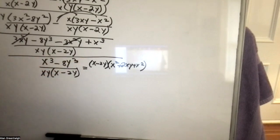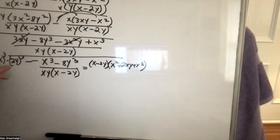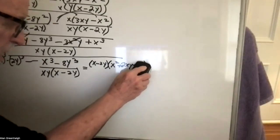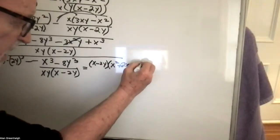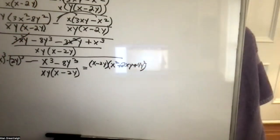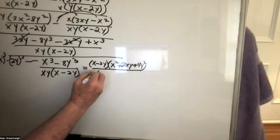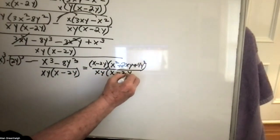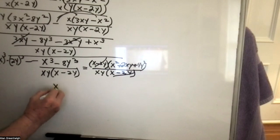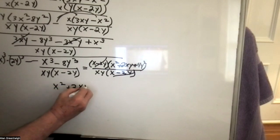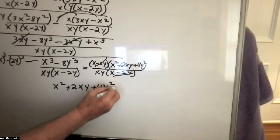It's really x to the third minus 2y to the third. So it's not just y squared — it's 4y squared because it's 2xy times 2xy. Then this is xy times x minus 2y. This cancels out with this, and the answer is x squared plus 2xy plus 4y squared over xy.